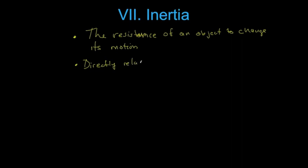Inertia can be defined as the resistance of an object to change its motion. And that means the resistance of an object to change its speed or direction. It is directly related to its mass. So inertia is directly related to an object's mass. More mass equals more inertia.